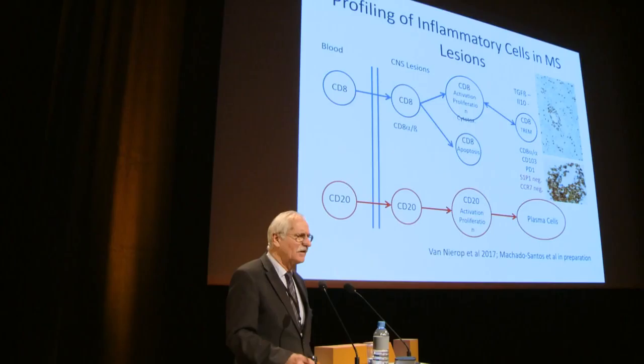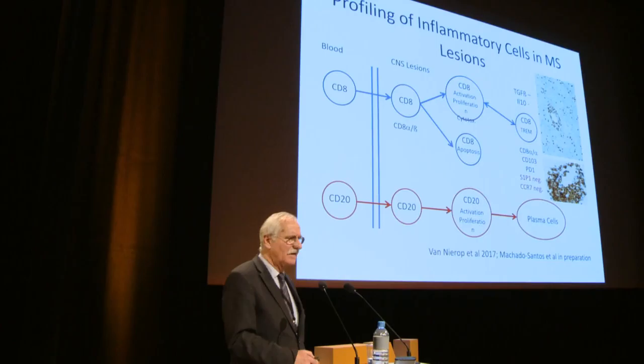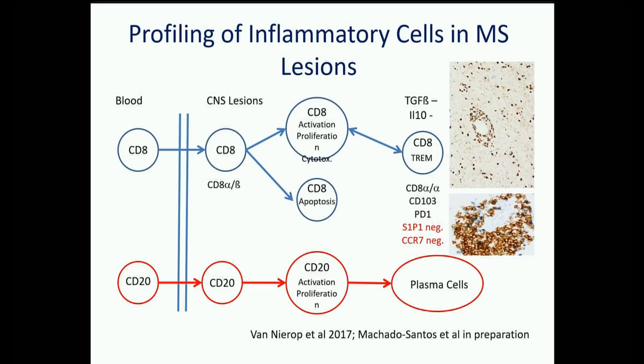Tissue resident memory T cells downregulate receptors allowing them to egress from tissue — namely S1P receptors and the CCR7 chemokine receptor. This means S1P receptor blockade cannot act on these cells. Additionally, these cells don't proliferate or show acute activation, so drugs interfering with proliferating cells won't affect them either. They also don't express anti-inflammatory cytokines, suggesting they are probably not regulatory cells.